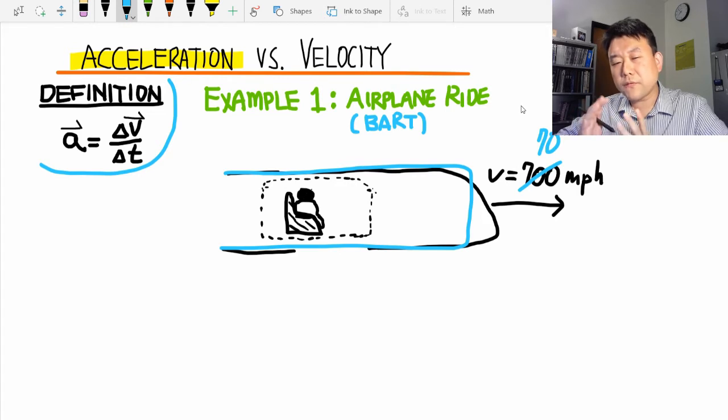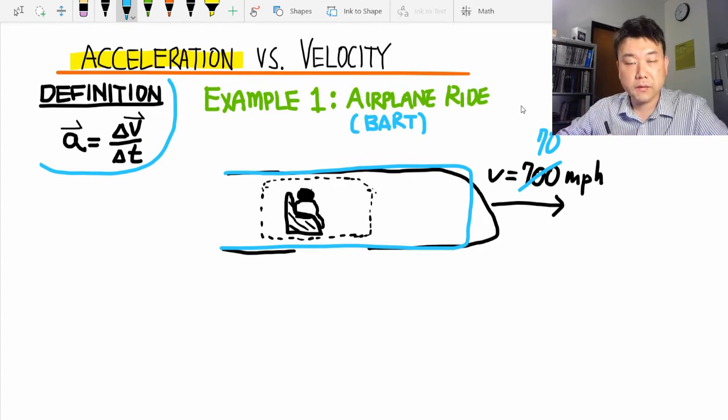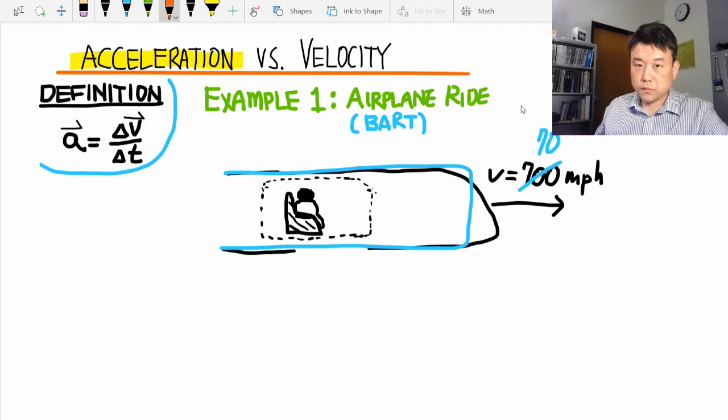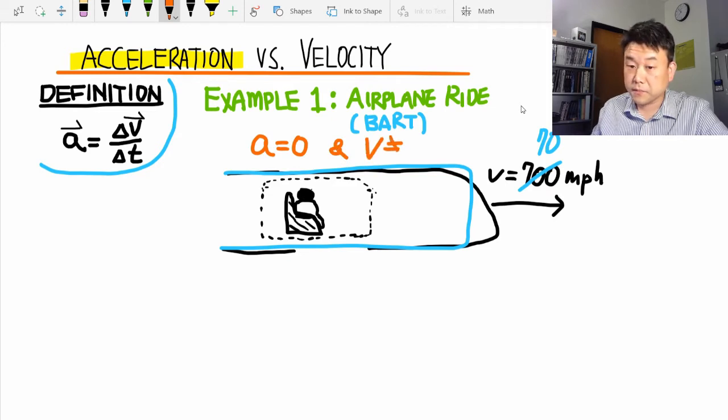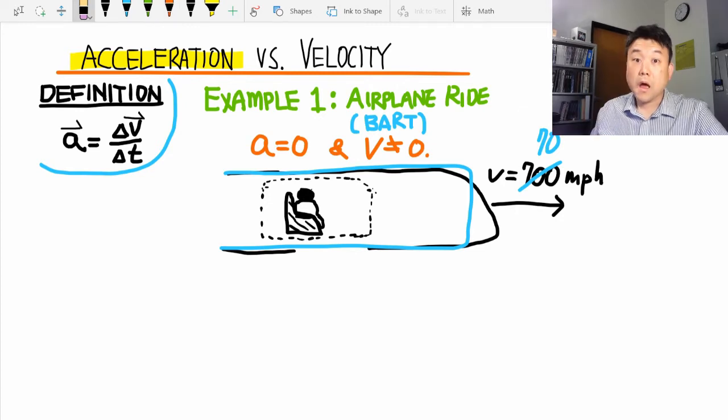It just left the station, it reached the maximum speed of 70 miles per hour, and the next station is a few minutes away. So it's continuing to move at 70 miles per hour. It's that portion of the motion that you don't quite feel it. You only feel that BART is moving when it's beginning to move or when it's coming to a stop. So this is an example of motion where acceleration is zero and the velocity is not zero. This is what I mean - acceleration is mostly what you feel in a motion.